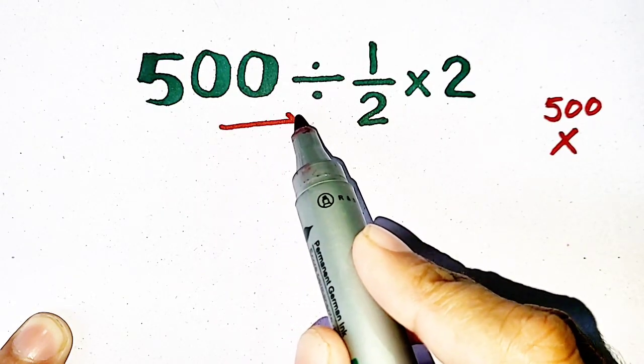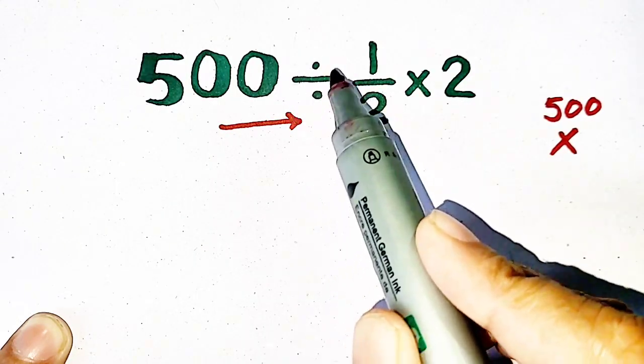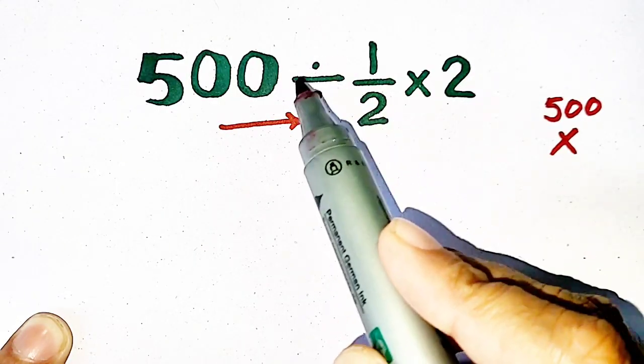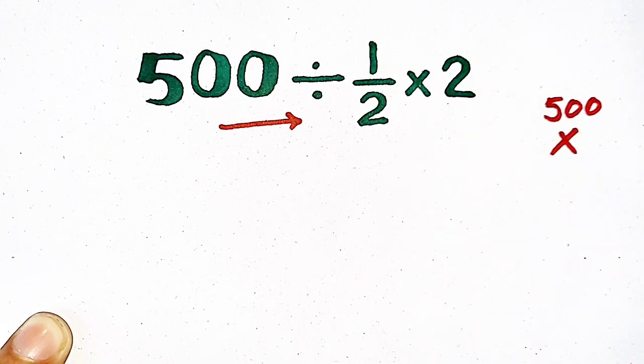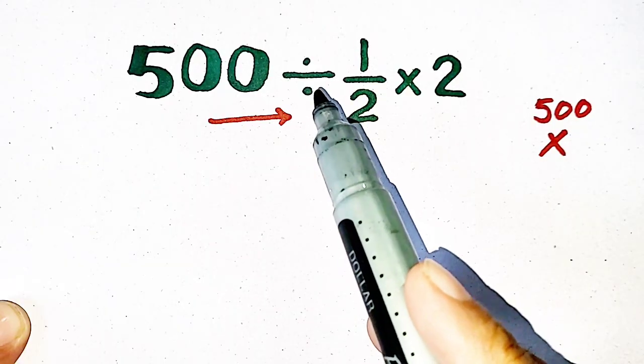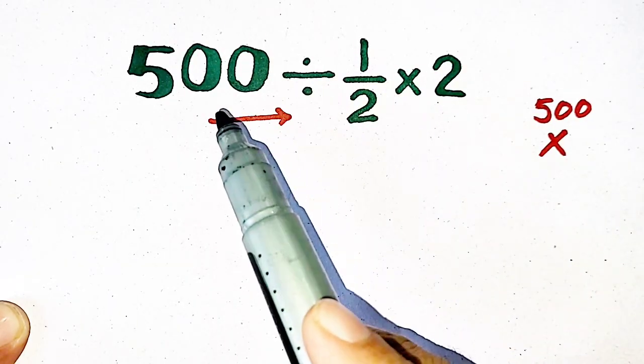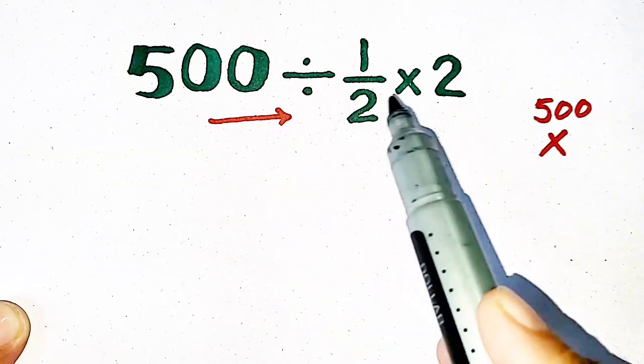We have to move from left to right while solving because this expression has division as well as multiplication. You are seeing that this expression has division as well as multiplication, and we have to move from left to right.